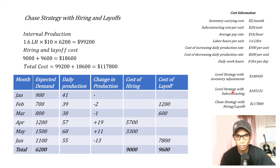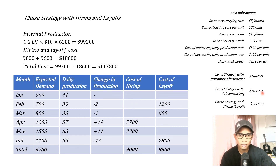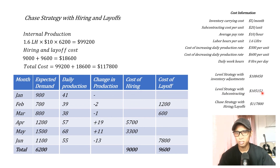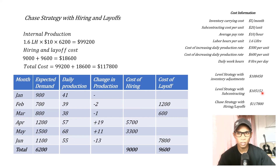Comparing the three strategies: Level with inventory adjustments = $108,450; Level with subcontracting = $105,152; Chase strategy = $117,800. The level strategy with subcontracting yields the lowest total cost, so that is the one we would select. Hopefully that was clear — we'll do some more examples later on.